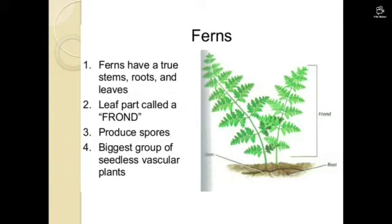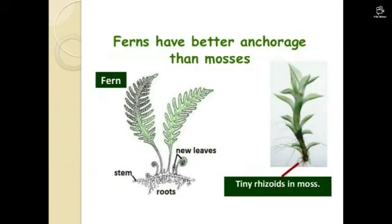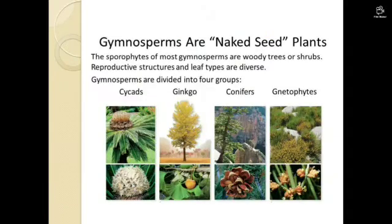Ferns have true roots, stems, and leaves. They produce spores and they are the larger seedless vascular plants. Ferns have better-developed vascular tissue than mosses.